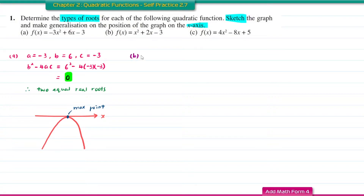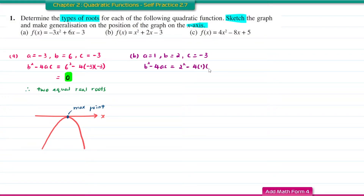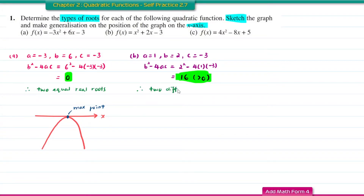Question B. The value of A is 1, B is positive 2, and C is negative 3. Let us find the value of the discriminant: 2 squared minus 4 times 1 times negative 3. The answer is 16, which is greater than 0. So when the value of a discriminant is greater than 0, the function will have 2 different real roots.